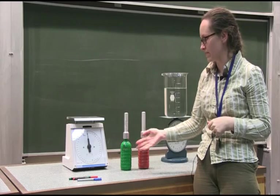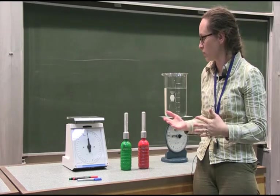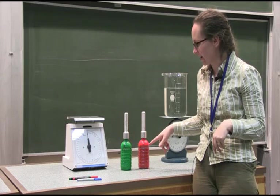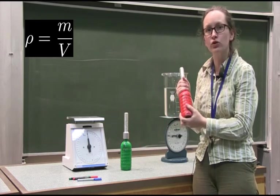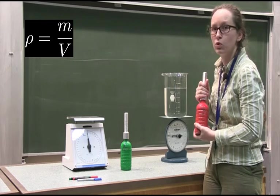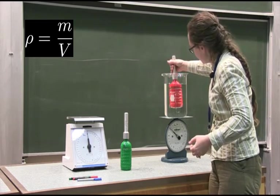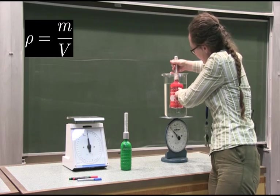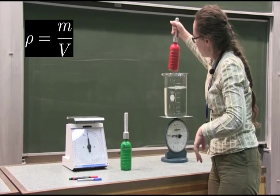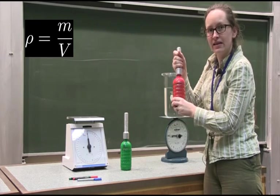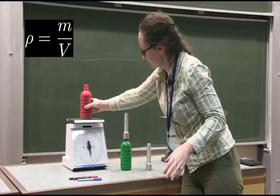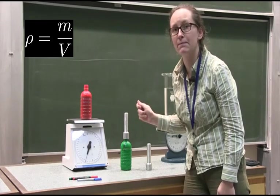Let's measure the density of the green bottle and the red bottle. To measure density we need the mass and volume of each bottle. Using Archimedes' method, we work out the volume of water displaced when we submerge the bottle. At the moment, this beaker shows 3,000 millilitres of water. Let's submerge the red bottle — it now reads 3,600 millilitres, so the bottle has a volume of 600 millilitres. To get its density, we also need its mass, so let's take the handle off and weigh it: it has a mass of 1.2 kilograms.